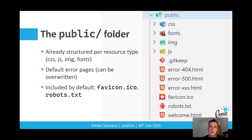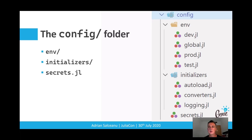Checking out the public folder, we can see it already comes with the robots.txt and favicon file as well as the most common error pages. Genie comes with predefined optimized configurations for various environments including dev, prod, and test, with a secrets file for encrypting data, as well as an initializer folder for scripts executed early when the application is started.